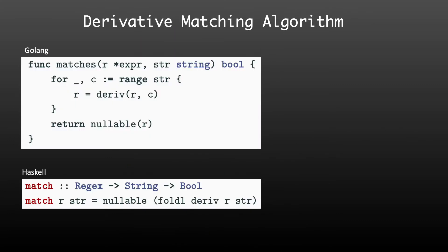That means we only need two functions to write the derivative matching algorithm: the derivative function and the nullable function. When we have these, we can simply loop over the input string, eat all the fruit, and check that the resulting expression matches the empty string. Here we have two implementations — one in Go for the imperative programmers and one in Haskell for the functional programmers. These two functions are equivalent and just written in different styles. In Haskell, foldL does the work of the for loop, and function application uses a space instead of commas.